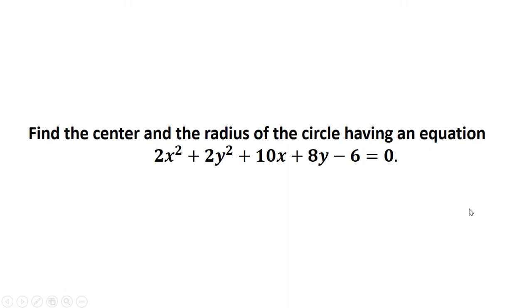Let's have this problem: find the center and radius of the circle having an equation 2x squared plus 2y squared plus 10x minus 8y minus 6 equals 0.